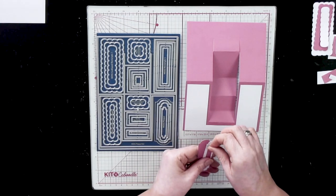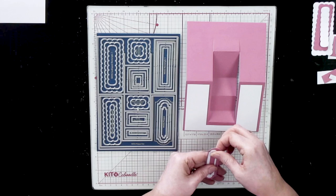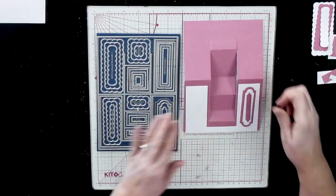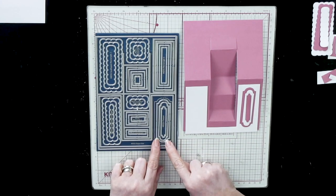I've then gone ahead and actually cut extra mats and layers out and I've done these in quite a strong color so you can see where we're going.